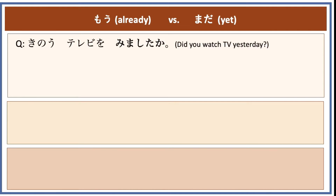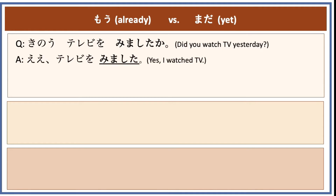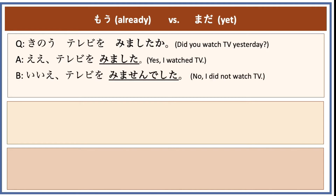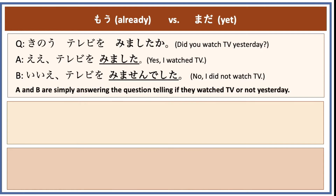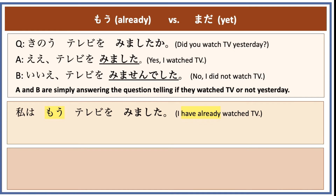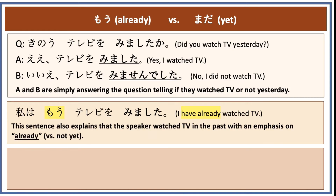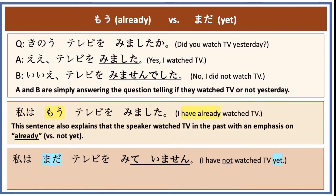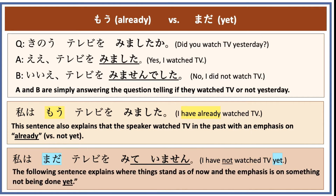In this dialogue, the question asks, Kino, terebi wo mimashita ka? — Did you watch TV yesterday? A says, Ee, terebi wo mimashita — Yes, I watched TV. B says, Iie, terebi wo mimasen deshita — No, I didn't watch TV. A and B are simply answering the question, describing if they watched TV or not. Watashi wa mou terebi wo mimashita — I have already watched TV. Please know that mou is used to emphasize that something has been done, versus something that has not been done. Its opposite is, Watashi wa mata terebi wo mite imasen — I have not watched TV yet. This sentence explains where things stand as of now, with the emphasis on something that has not been done yet, as opposed to something that was not done in simple past tense form.